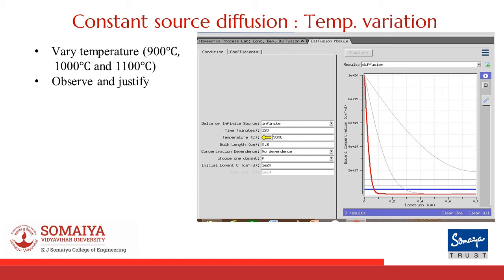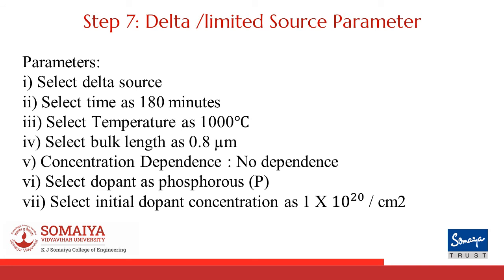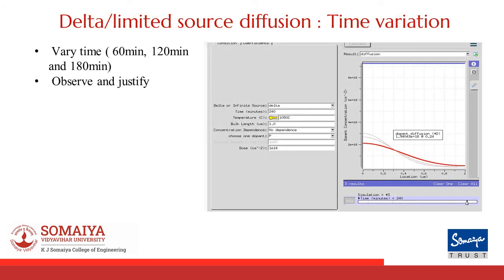These are the parameters to be considered for delta or limited source diffusion. Let's also observe the effect of time variation on delta or limited source diffusion. Vary the time from 60 minutes to 120 minutes and then 180 minutes and observe the effect on diffusion.